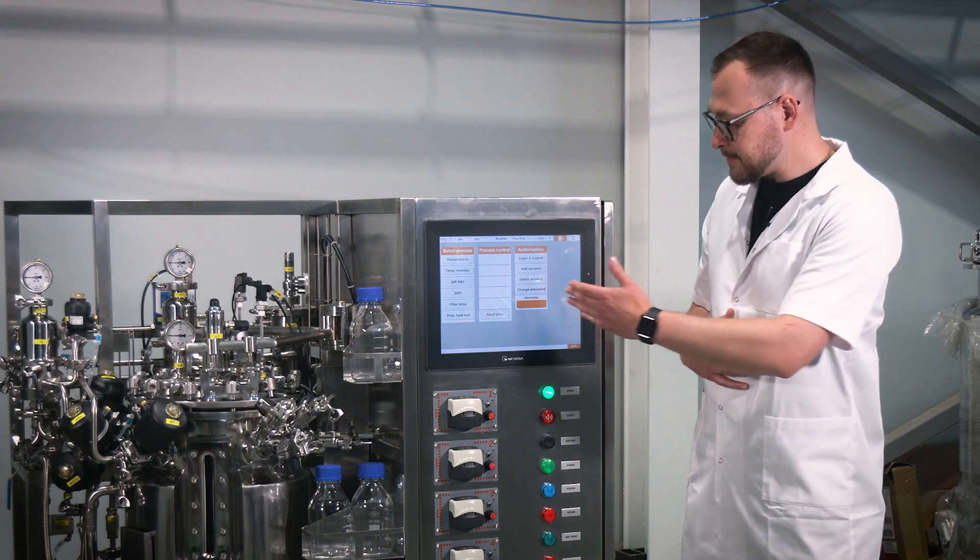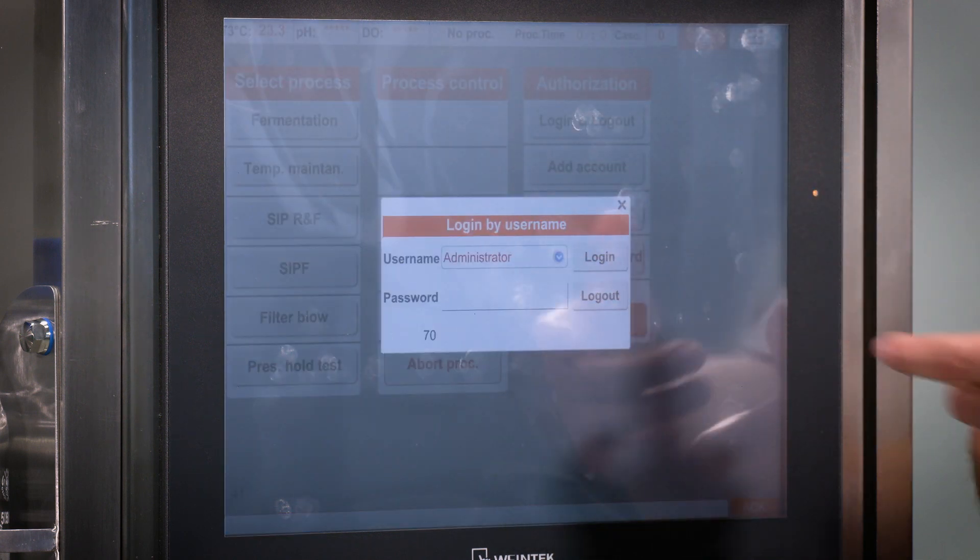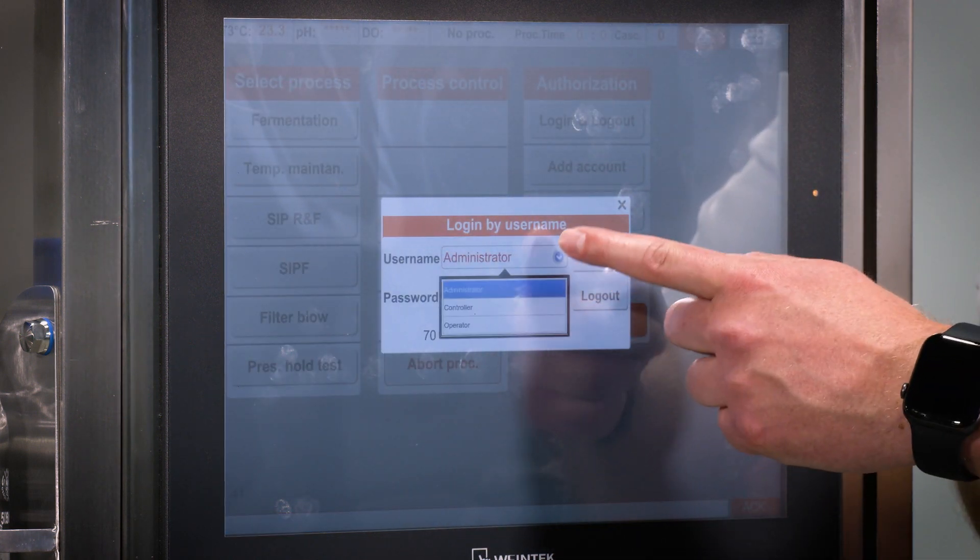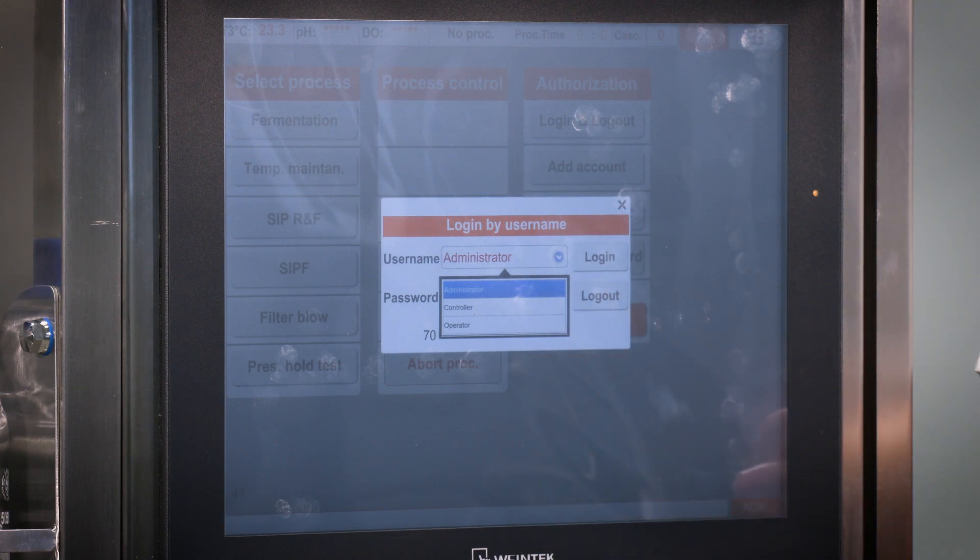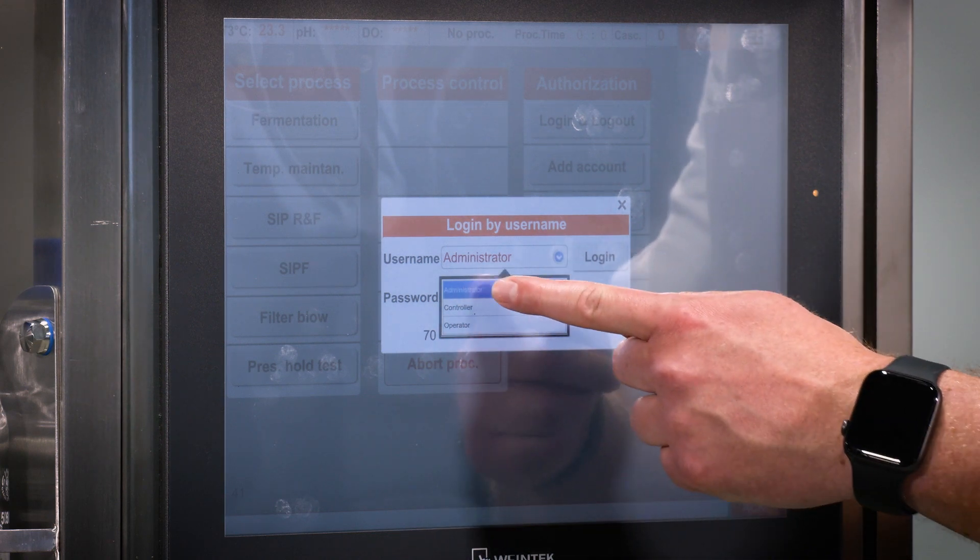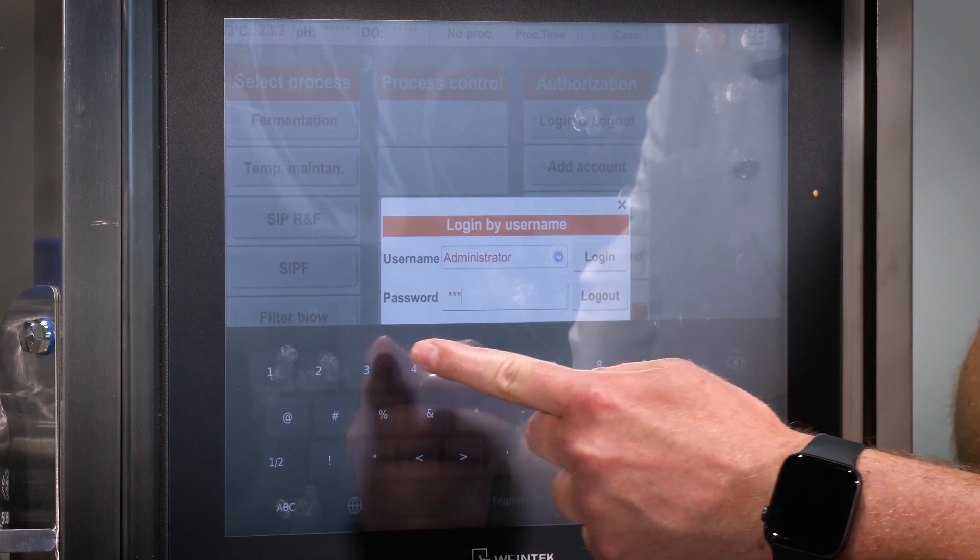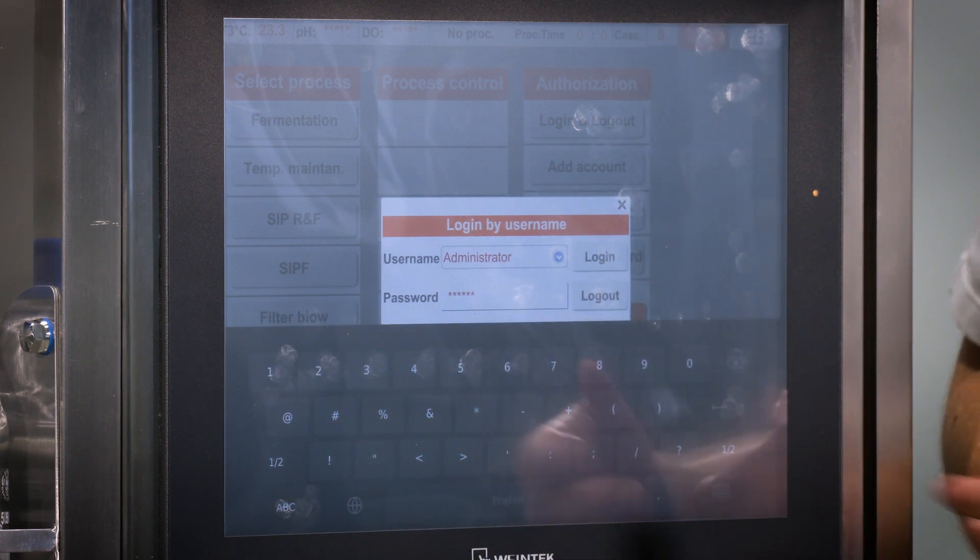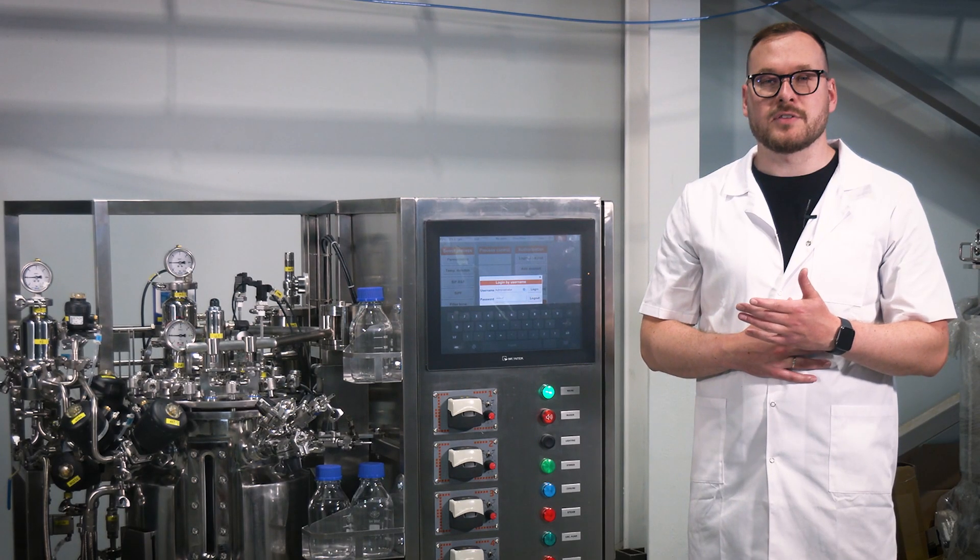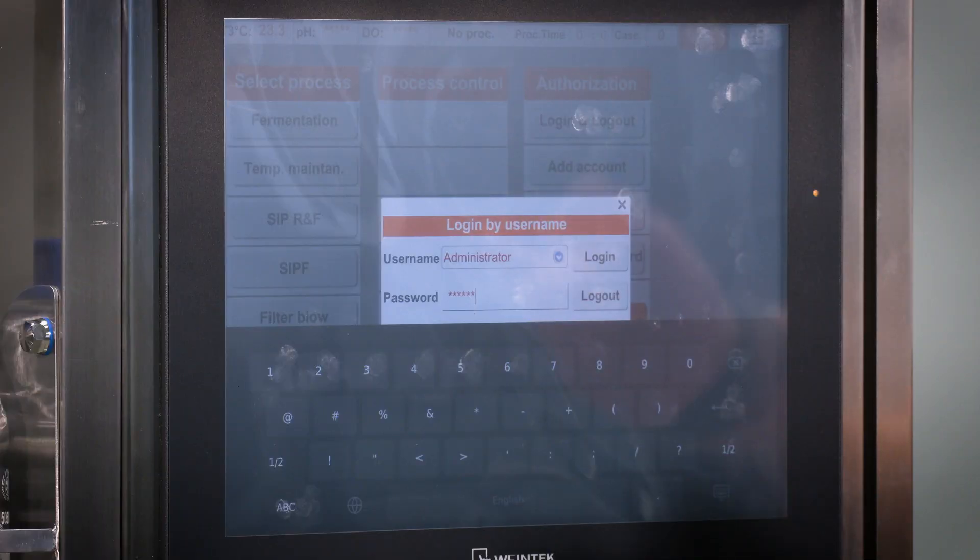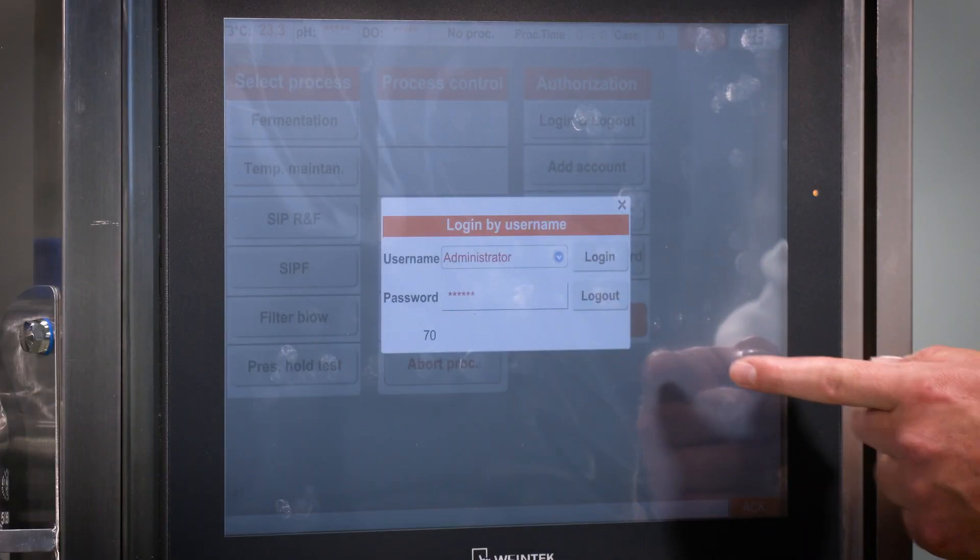In the authorization section, choose the desired access level: controller, operator or administrator. Enter the respective password by clicking on the blank space next to the word password and press enter and log in.